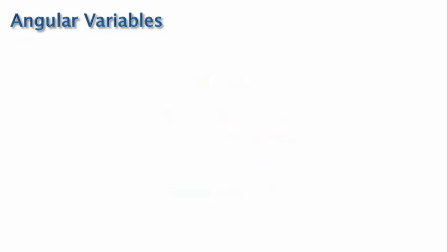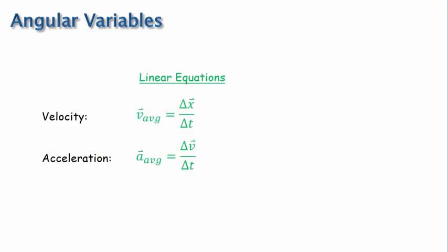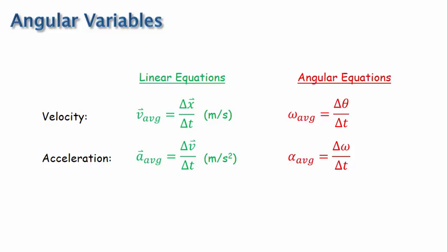Now let's take a look at the other angular variables. We'll find that there are many parallels between the linear equations that we are familiar with and the new angular ones. For linear variables, we know that the average velocity and average acceleration are defined with these equations, and the SI units are meters per second and meters per second squared. Average angular velocity and average angular acceleration are defined by very similar equations, where the average velocity is still the displacement over time and the average acceleration is still the change in velocity over time, but now we're using angular variables. And then the SI units for angular velocity and angular acceleration are radians per second and radians per second squared. We will also continue to use the sign convention that counterclockwise is the positive direction and clockwise is the negative direction.